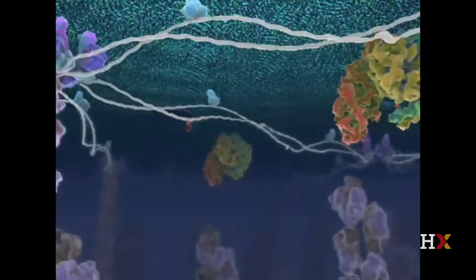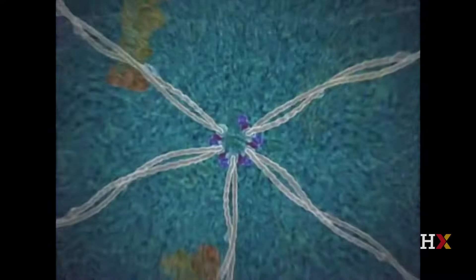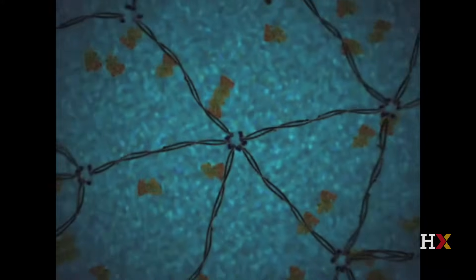If we flip across the membrane and look on the inside of the cell, we'll see this remarkable internal architecture made up of the cytoskeleton.